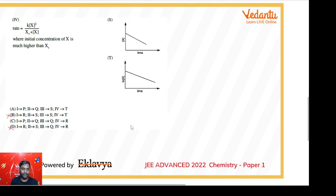In option A, third is matched with S, but in option C, third is matched with Q. So C is also ruled out, which means option A is correct. We did that by elimination.